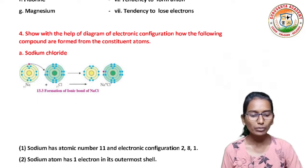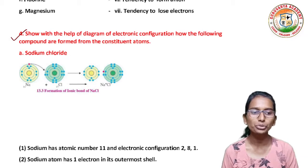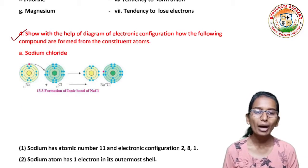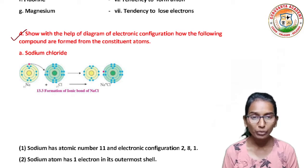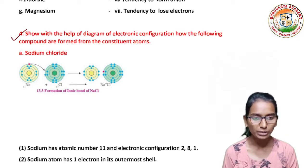Question number 4. Show with the help of a diagram, using electronic configuration, how the following compounds are formed from the constituent atoms.